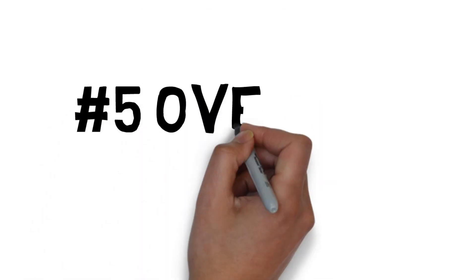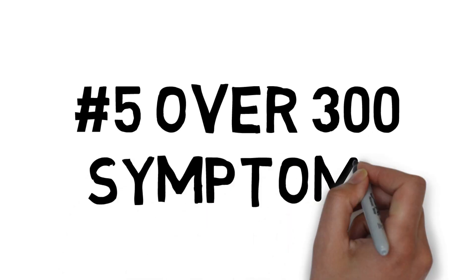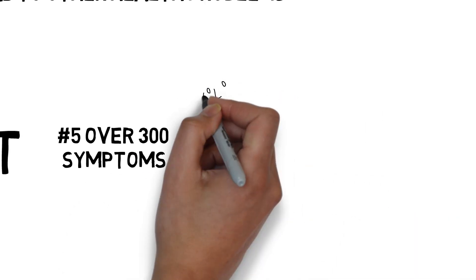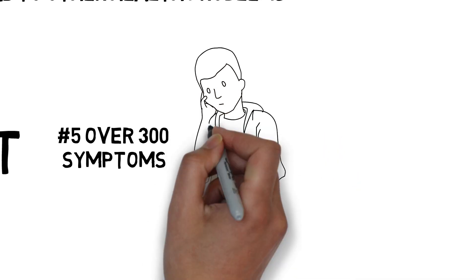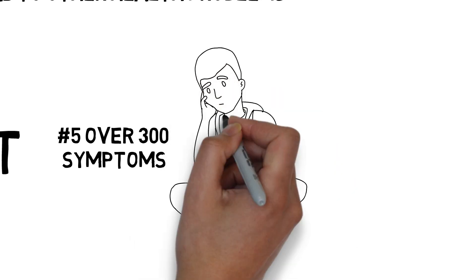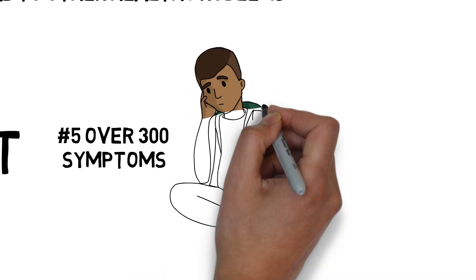Number 5. There are over 300 symptoms of celiac disease, including fatigue, vomiting, abdominal pain, and constipation, to name just a few. Most of these symptoms can be avoided by having a gluten-free diet, so the symptoms are generally worse in those who are undiagnosed.